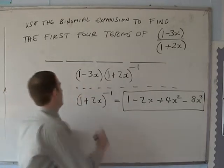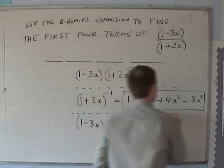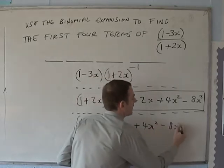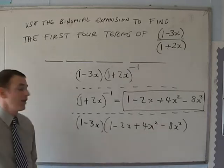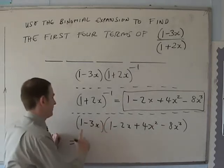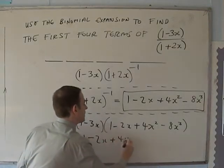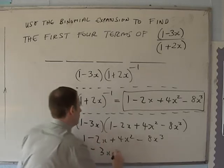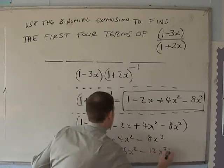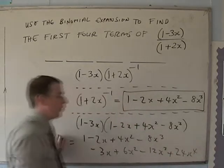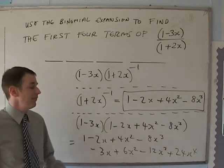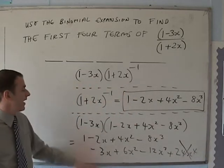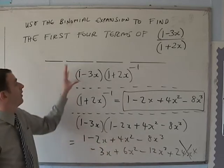We end up with 1 − 2x + 4x² − 8x³. Those are only the first few terms — we could go on forever. This is all being multiplied by (1 − 3x), so we rewrite this as (1 − 3x)(1 − 2x + 4x² − 8x³) and multiply all the way out. We do 1 × (1 − 2x + 4x² − 8x³) minus 3x × (1 − 2x + 4x² − 8x³). Since we only need the first four terms, we can discard the x⁴ term, add everything together to get the final answer.